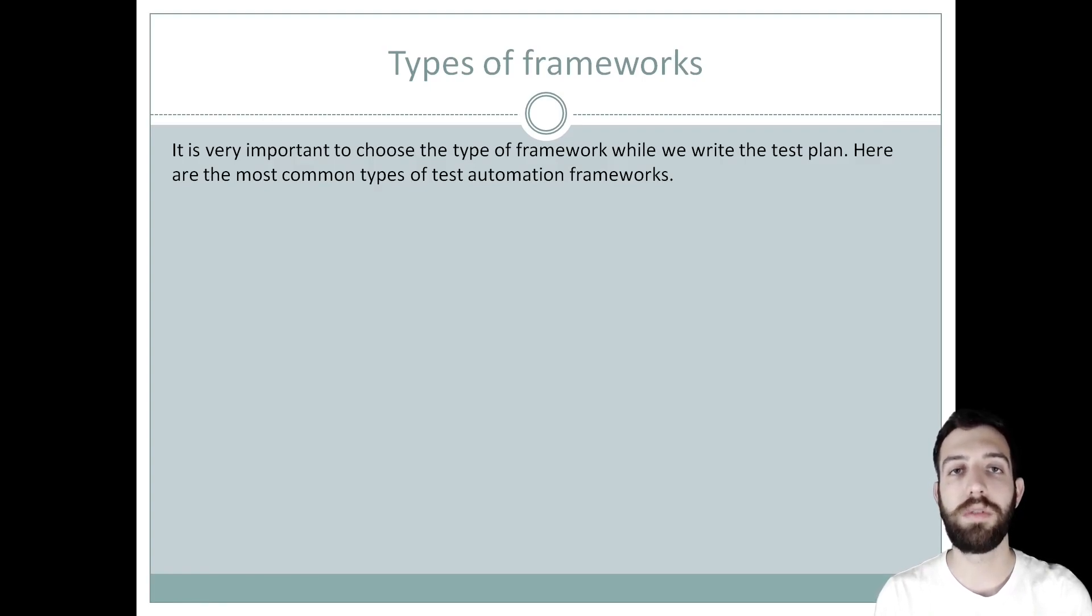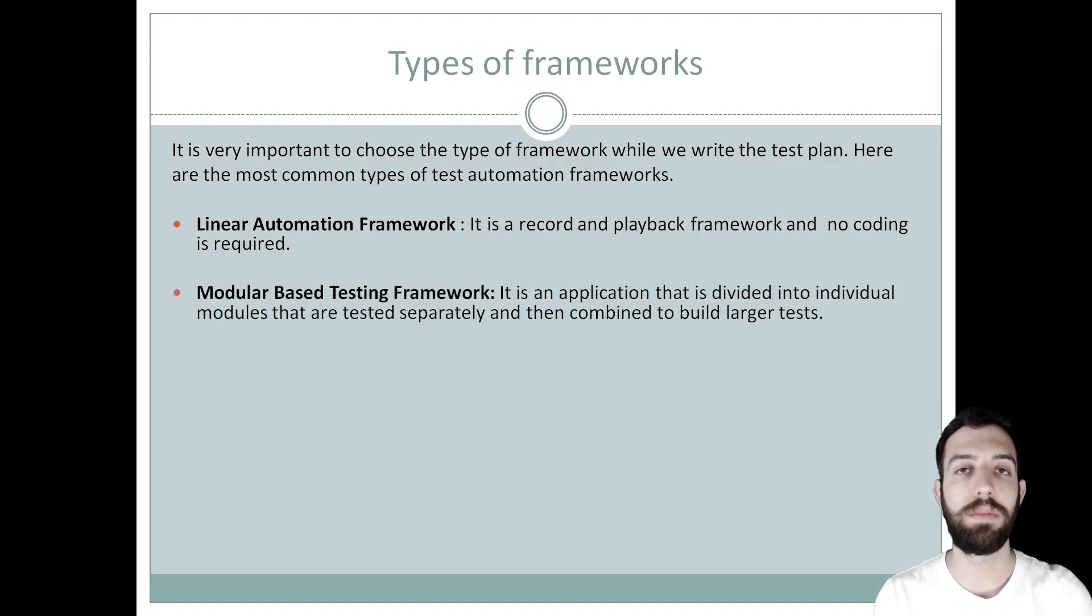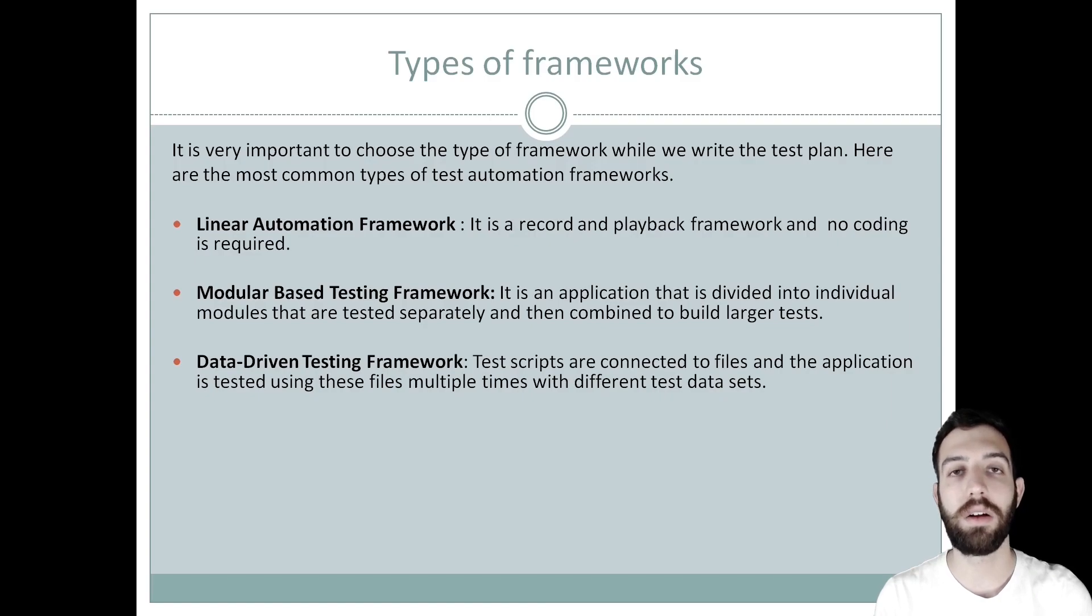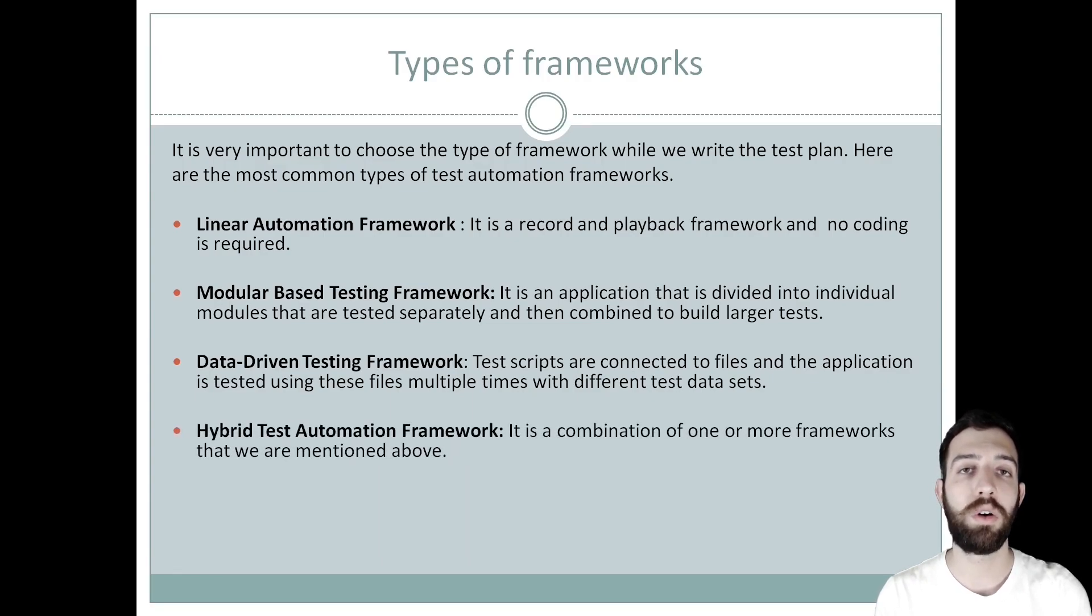The most common types of test automation framework are: first is the linear automation framework which is a record and playback framework with no coding required. Second is the modular-based testing framework which is an application divided into individual modules that are tested separately and then combined to create larger tests. Third is the data driven testing framework in which test scripts are connected to files and the application is tested with the help of these files by using them multiple times with different test data sets. Last is the hybrid test automation framework which is a combination of one or more frameworks that we mentioned above.